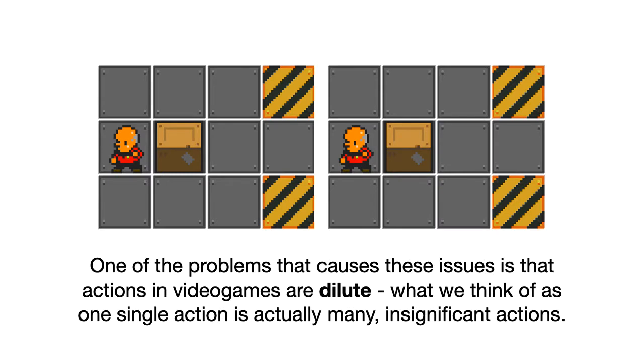Now one of the reasons for this is that video games are what I call dilute. So we think of moving around in a game like this one, which is Sokoban, where we're sort of pushing boxes and moving around the world. We think of these actions in a very high level way. We think of ourselves like, I'm going to walk over to the other side of the room here. But when we actually convert that into actions in the game, when we press buttons on the keypad, that single action is actually composed of many smaller actions. And that's what I mean by dilute. A single action here doesn't actually achieve very much. It doesn't change the world in a very significant way. And this is one of the reasons why MCTS can easily get lost in certain games if it doesn't have any guidance on where to go.